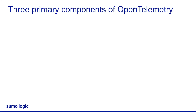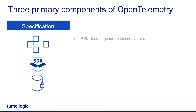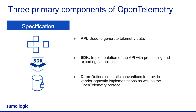First is the specification. The specification defines the cross-language requirements for all implementations. It consists of an API to generate your observability data, a software development kit or SDK that provides the implementation of the API, and the ability to export the data, as well as the semantic conventions and protocol of OpenTelemetry.